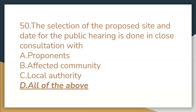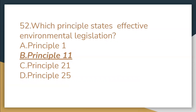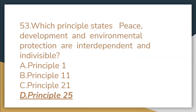The selection of the proposed site and the date for the public hearing is done in close consultation with proponents, the affected community, and local authority — so the answer is all the above. How many principles are in the Rio Declaration? 27. Which principle states effective environmental legislation? Principle 11. Which principle states that peace, development, and environmental protection are interdependent and indivisible? Principle 25.